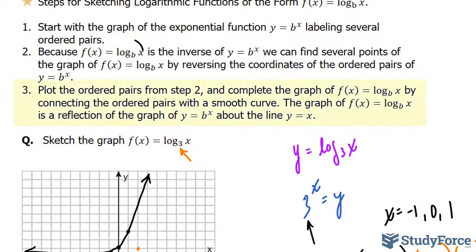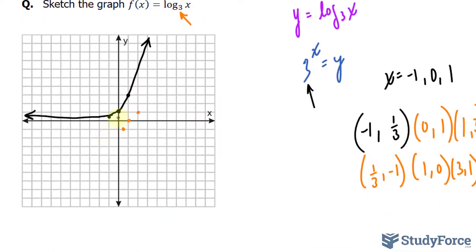Finally, in step 3, they say plot the ordered pairs from step 2, which we just did, and complete the graph of the function by connecting the ordered pairs with a smooth curve. The graph of the log function is a reflection of the graph y = b^x about the line y = x. The line y = x is a diagonal crossing through the origin.